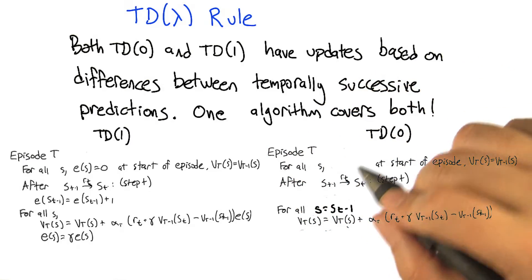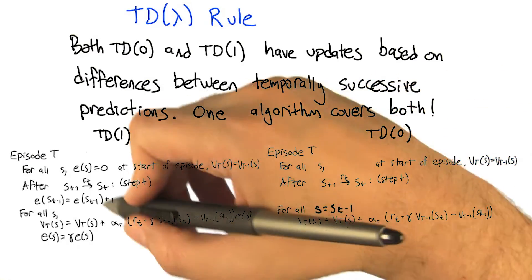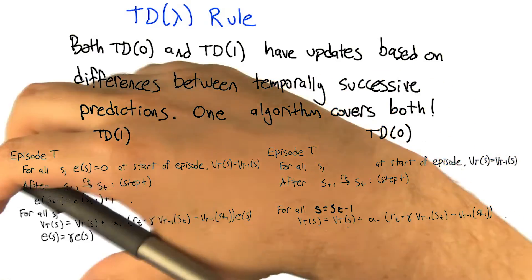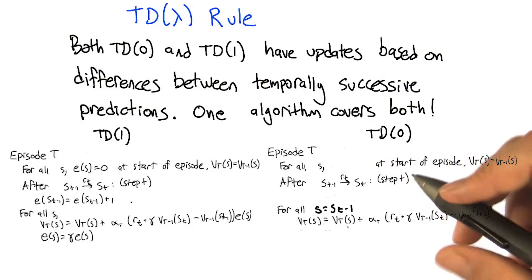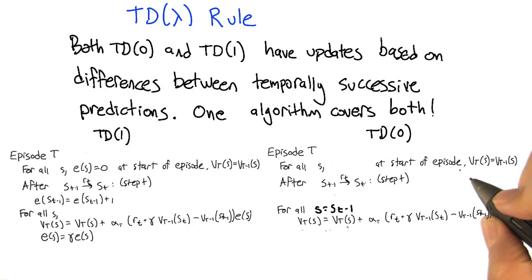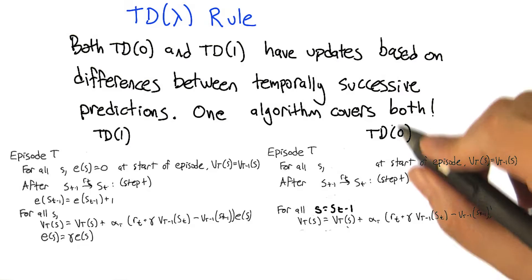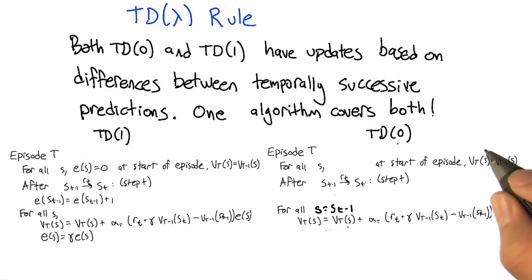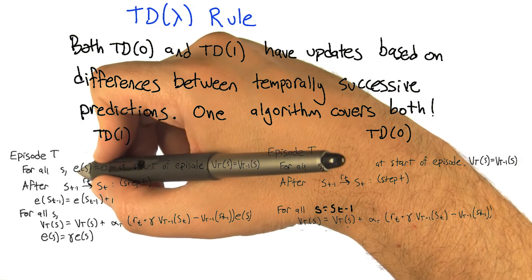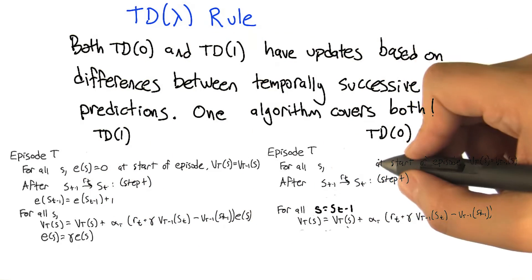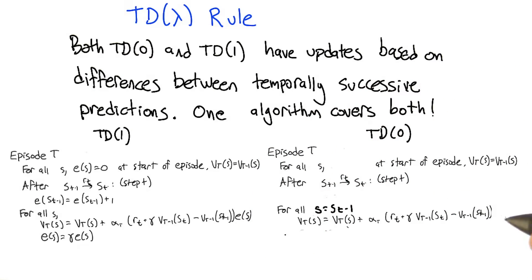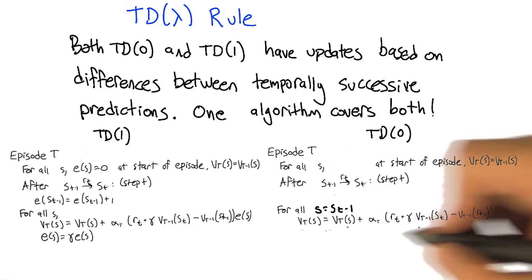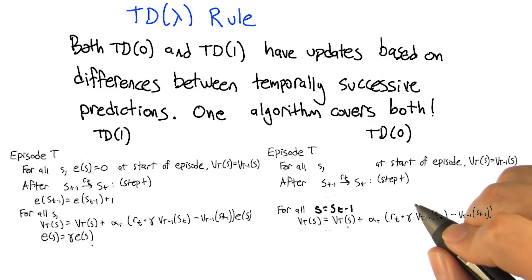All right, and so to highlight the similarities and differences between TD(1) and TD(0), I took the TD(1) algorithm we just had and shrunk it and moved it over to the left, and then made another copy of it, put it on the right, and made the minimum changes necessary to turn TD(1), what was TD(1), into TD(0). And so mainly all that involved was every time the eligibility was mentioned, I kind of got rid of it. So I got rid of it from there. I got rid of it from there. And I don't multiply it here against the temporal update, and I don't have to update it here.